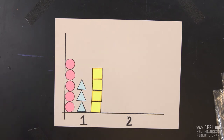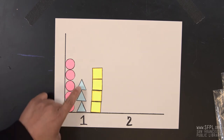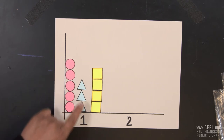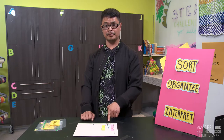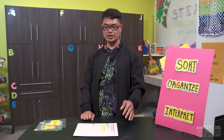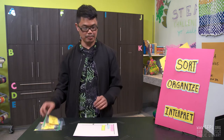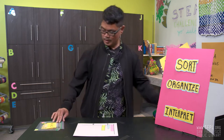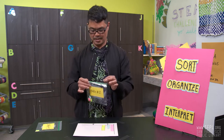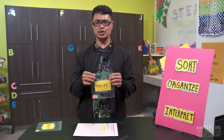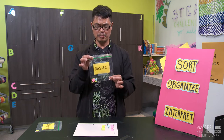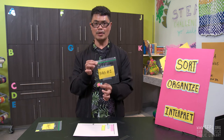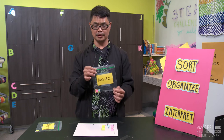Let's ask another question. Which shape has the least amount? The shortest line tells us that that shape is the least amount, which is triangle. Now let's make it more interesting. Let's grab another bag of data — bag number two. At home, make sure your bag number two has the same objects as your bag number one.